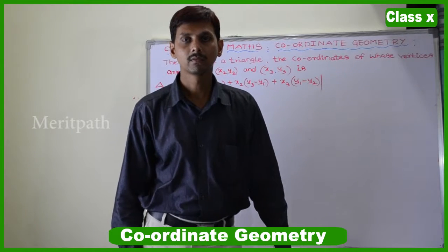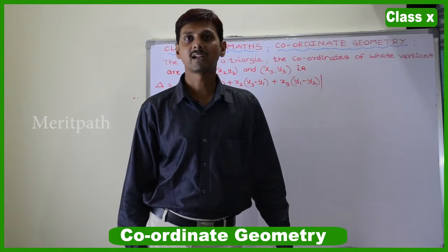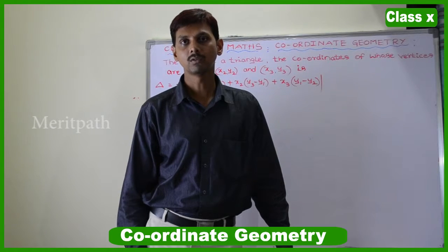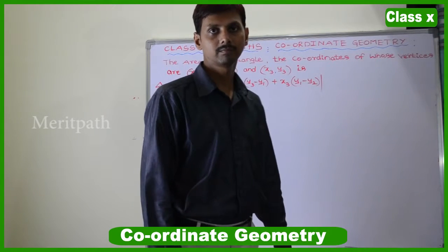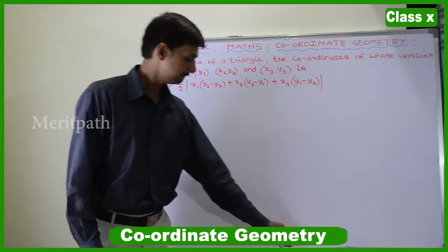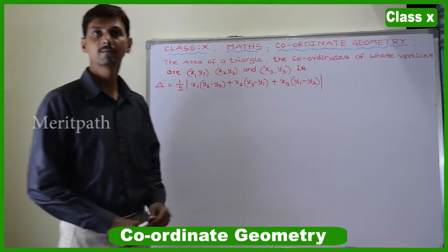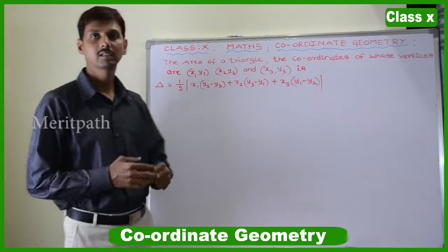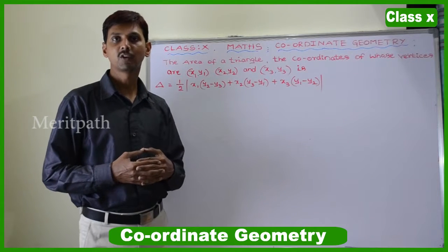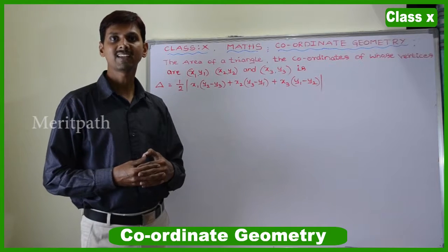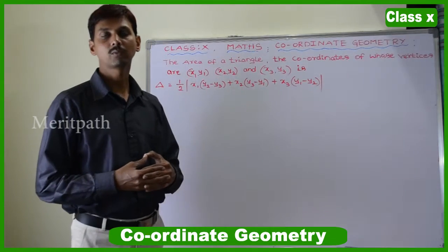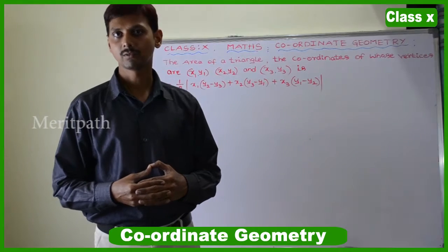In triangle ABC, three vertices are given: x1y1, x2y2, and x3y3. We need to find the area of a triangle, so let us see how to prove this. The area of a triangle is nothing but half into modulus of x1 into (y2 minus y3) plus x2 into (y3 minus y1) plus x3 into (y1 minus y2).